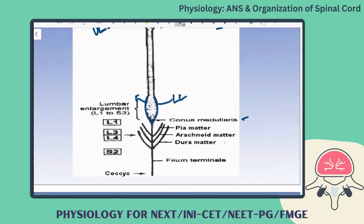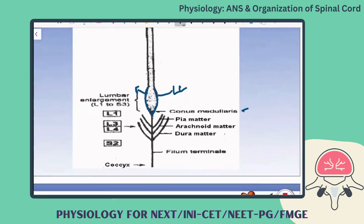The three meningeal layers are: the innermost pia mater, which is close to the brain and travels into all sulci and gyri; next is the arachnoid mater; and the outermost dura mater, which is firmly attached to the skull. Since the spinal cord is also part of the nervous system, it also has meningeal covering extending up to the level of L5, with pia mater, arachnoid mater, and dura mater.